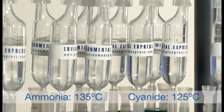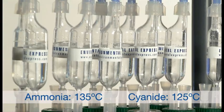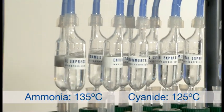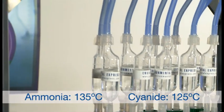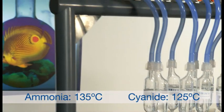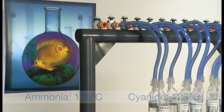The hot block should be heated to 125 degrees Celsius for cyanide distillations and 135 degrees Celsius for ammonia distillations. Once the temperature has been reached, the distillation process takes one hour.